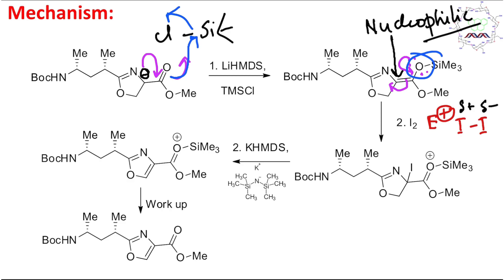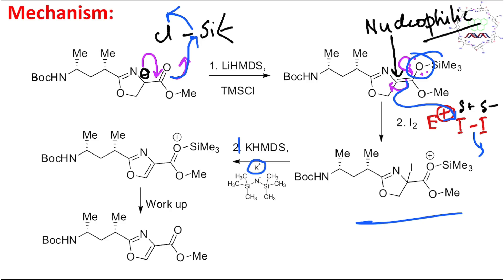The nucleophilic carbon attacks the electrophilic iodine, iodide leaves, and iodination occurs. In the second step, KHMDS is given. Students, note that the cationic part differs — lithium HMDS uses lithium, KHMDS uses potassium — but the organic part acting as a base is the same: two very bulky trimethylsilyl groups that make this base selective for proton abstraction.